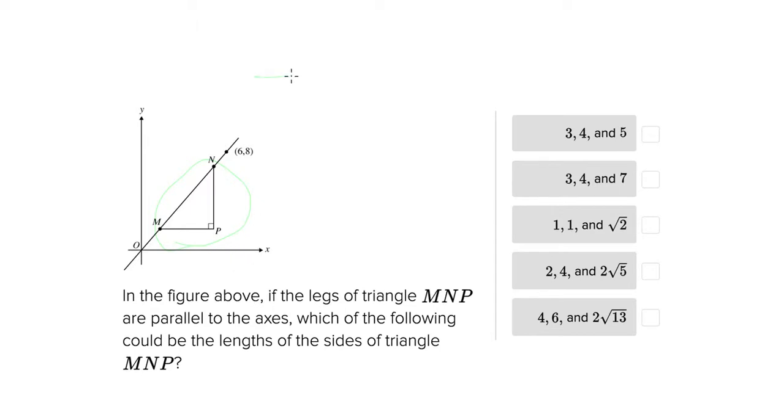We're going to look at both of those aspects and how they apply to this problem. In the figure above, the legs of triangle MNP are parallel to the axes, so we know that MP is parallel to the x-axis and NP is parallel to the y-axis. That's important information. We're asked which of the following could be the lengths of the sides of the triangle.